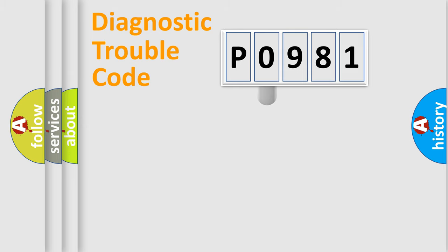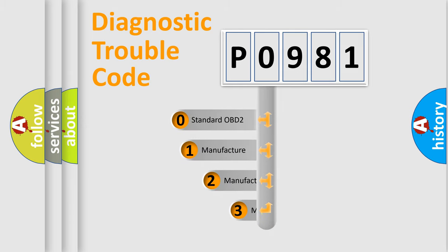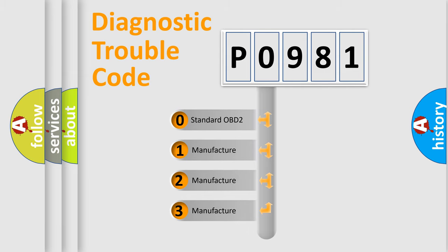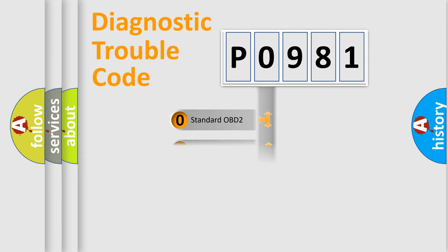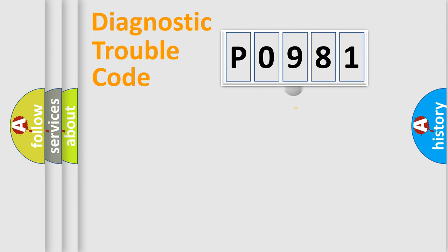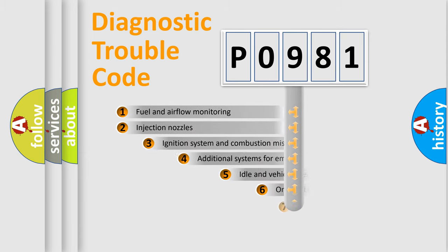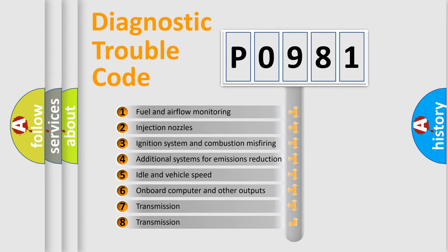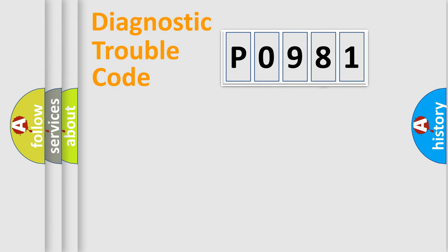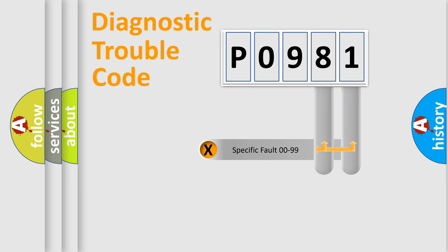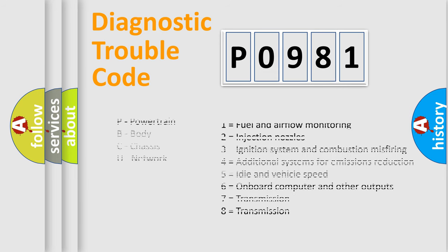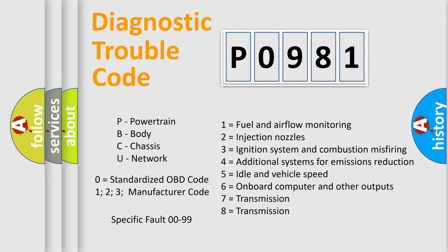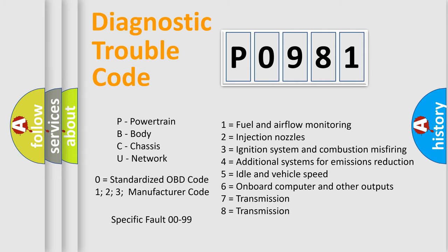This distribution is defined in the first character of the code. If the second character is expressed as zero, it is a standardized error. In the case of numbers one, two, or three, it is a more manufacturer-specific expression of the car error. The third character specifies a subset of errors. This distribution is valid only for the standardized DTC code, and only the last two characters define the specific fault of the group. This division is valid only when the second character is expressed by the number zero.